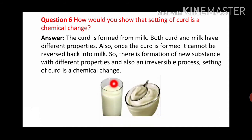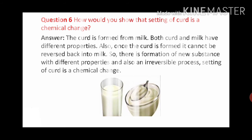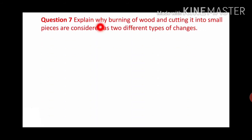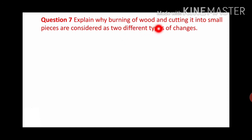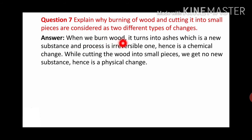Here you can see a diagram of milk and curd. Next question: explain why burning of wood and cutting it into small pieces are considered as two different types of changes. When we burn wood, it turns into ashes, which is a new substance and the process is irreversible, hence it is a chemical change. While cutting wood into small pieces, we get no new substance, hence it is a physical change.